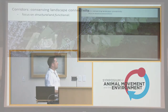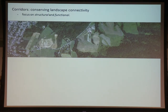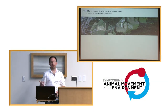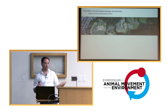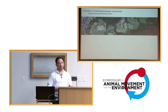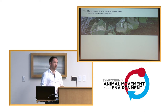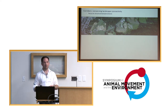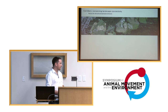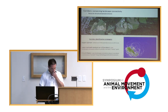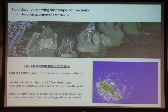I come from a conservation biology background, and the big thing for me is using movement data to infer landscape connectivity. How are these animals moving across the landscape, and how do we better understand the relationship between the structural component of the landscape and the functional functionality of the landscape? If you want to preserve animal movements and you're looking at corridors, there are several different ways you can do this.